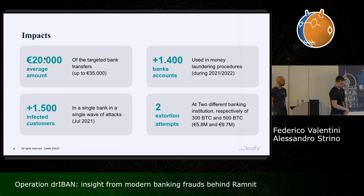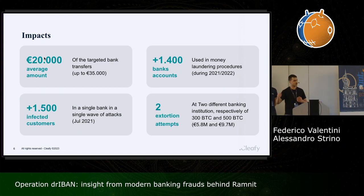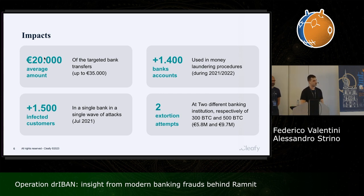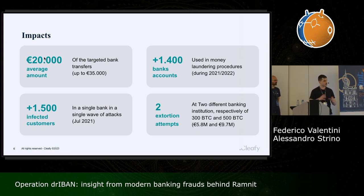A couple of numbers: the threat actors appear interested in specific, modest transaction amounts — they are not interested in very high banking transactions. From a money laundering perspective, that represents a different approach. During 2021 and 2022, we were able to extract the majority of the money mule network under this group's control, finding more than 1,400 different bank accounts. During a specific attack wave in July 2021, the threat actors were able to infect more than 1,500 different customers of a single banking institution.